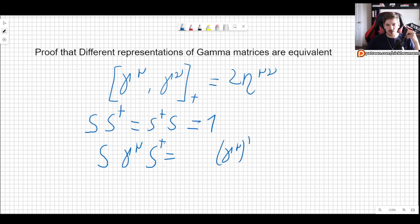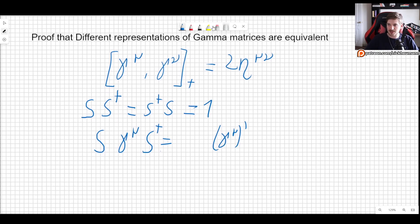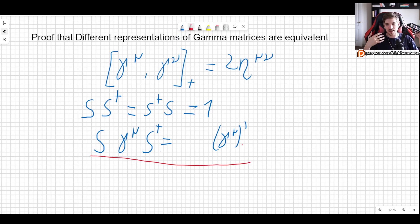So that's just a very common way of writing down these transformations. We will actually do it in the future as well. So this is the equation that basically tells us how we go from gamma mu to some other representation. We multiply by these S and S dagger matrices that are unitary.